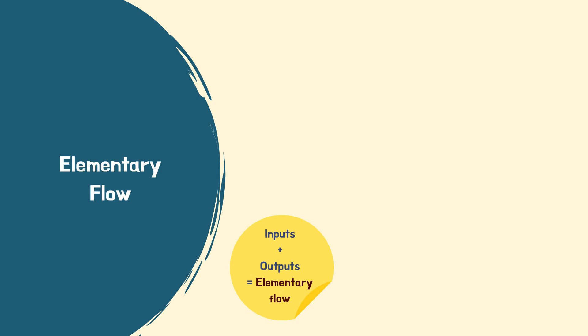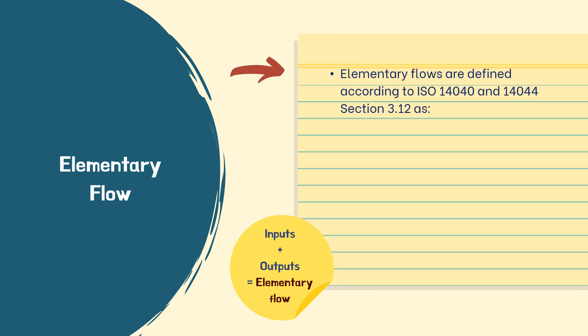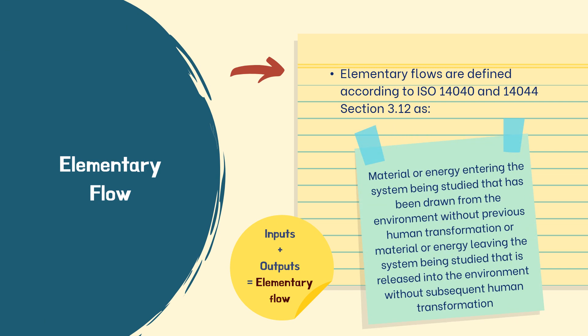In this list, both inputs and outputs are indicated as elementary flows. Elementary flows are defined according to ISO 14040 and ISO 14044, Section 3.12, as material or energy entering the system being studied that has been drawn from the environment without previous human transformation, or material or energy leaving the system being studied that is released into the environment without subsequent human transformation.